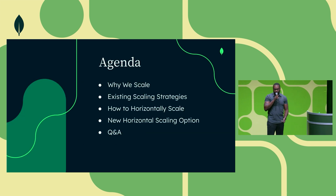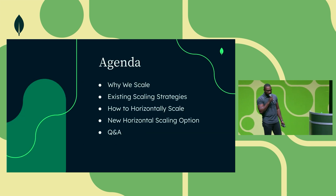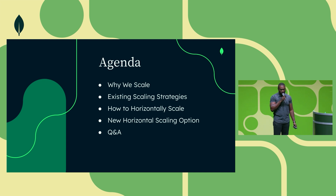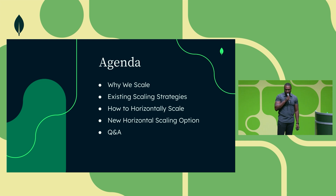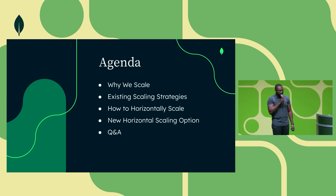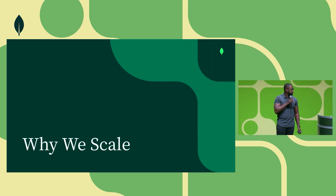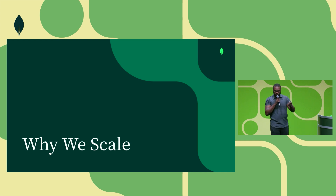First, I'll introduce why we scale our databases. Then we'll talk about our existing scaling strategies up until this new version of MongoDB. Then we'll go into how we normally scale horizontally. Then we'll talk about the new horizontal scaling option for MongoDB 8.0, and then I'll take questions at the end. If at any point you can't hear anything I'm saying, just raise your hand.